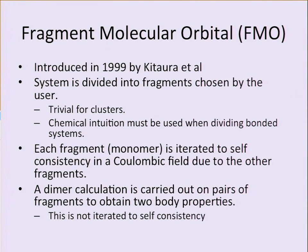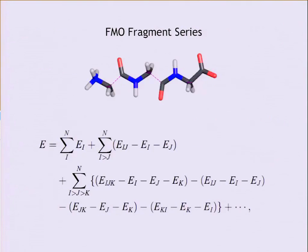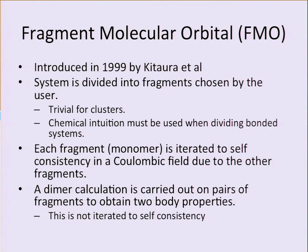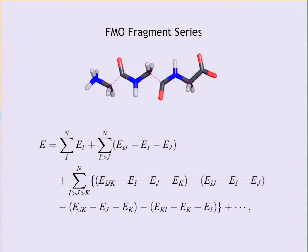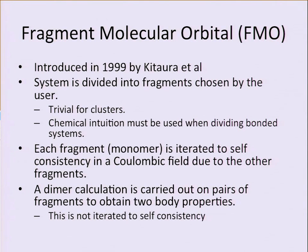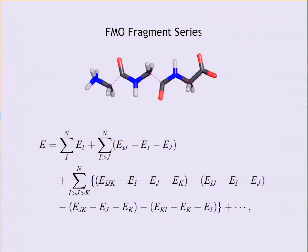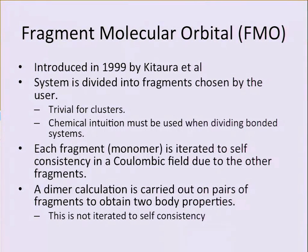Once we have our fragments, we do a quantum chemistry calculation — say, a Hartree-Fock calculation — on each individual piece, while accounting for all the other pieces classically through a Coulombic interaction. This Coulombic field changes each time because we're doing quantum calculations on each piece, so we iterate to self-consistency to obtain monomer densities. We then do a calculation on pairs of monomers — a dimer calculation — to recover two-body properties, including bonding in bonded systems. This dimer calculation is done in the electrostatic field of all other fragments.